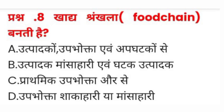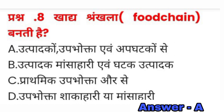Question number eight: खाद्य श्रृंखला (Food Chain) बनती है — A) उत्पादक, उपभोक्ता एवं अपघटक से, B) उत्पादक, मांसाहारी एवं अपघटक उत्पादक से, C) प्राथमिक उपभोक्ता से, D) उपभोक्ता शाकाहारी या मांसाहारी से। इसका सही जवाब A होगा।